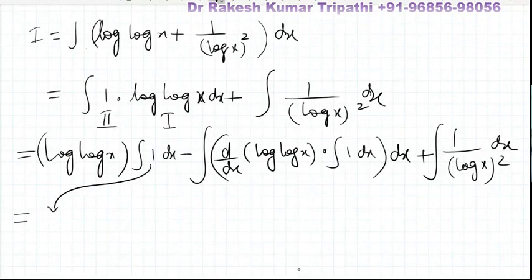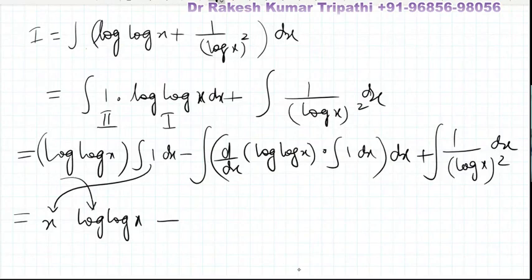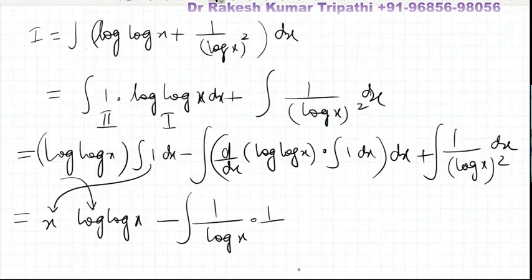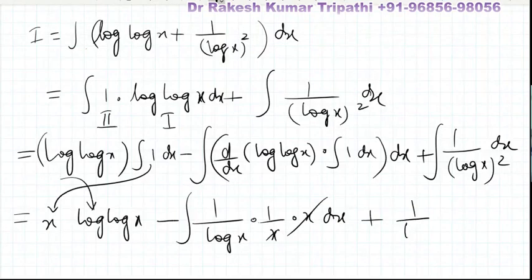The integral of 1 is x, so log(log x) remains constant. Minus the differential of log(log x), which is 1 upon log x, times the derivative of log x which is 1 by x, times the integral of 1 which is x — so x and x get cancelled. Plus 1 upon (log x) squared, giving us the integral of 1 upon (log x) squared.